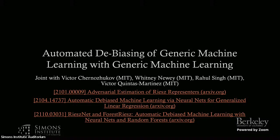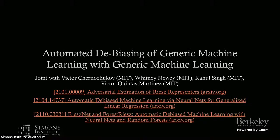The other part I wanted to talk about is automated debiasing of generic machine learning. This is joint work with Victor Chernozhukov, Whitney Newey, Rahul, and Victor Quintas-Martinez, all from MIT. This again deals with moment estimation problems. But now, apart from the more classical moment estimation conditions, we're also going to add nuisance functions to our moment conditions — functions that we need to estimate from data but don't really care about. Many problems in causal inference boil down to estimation problems that also have a nuisance component.